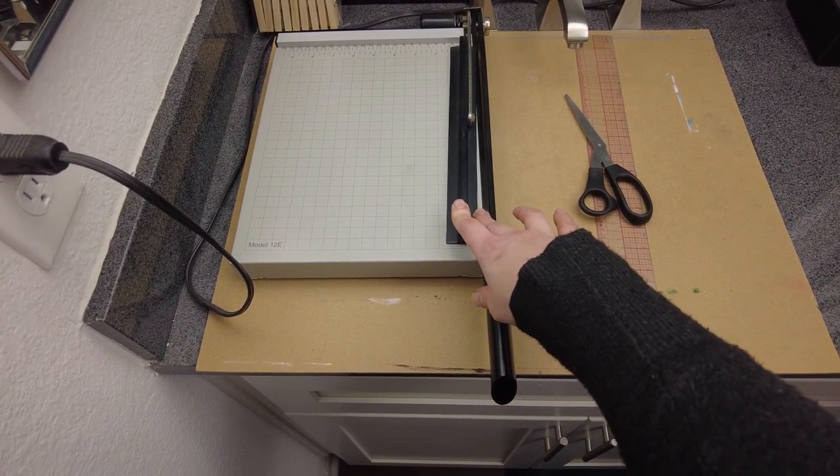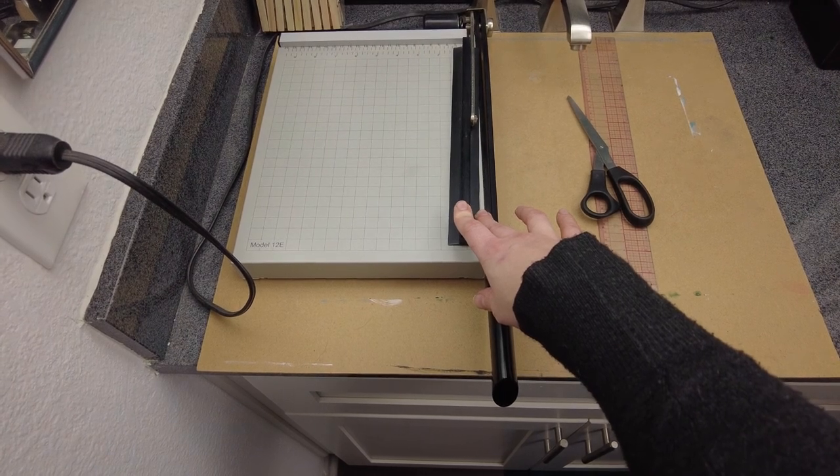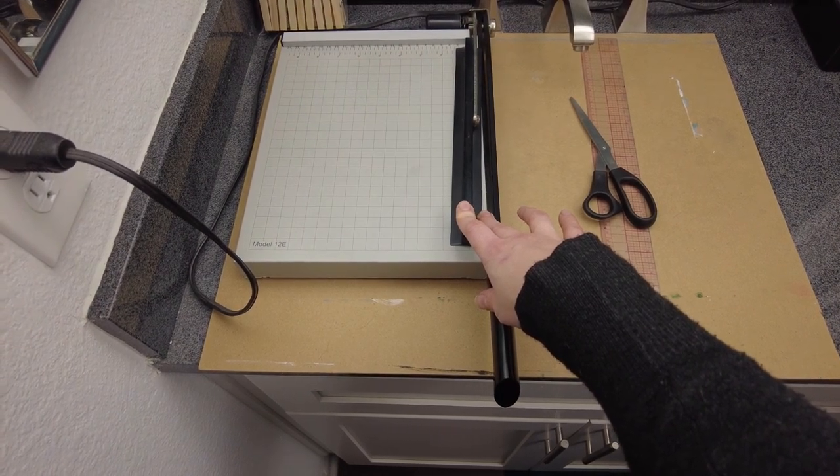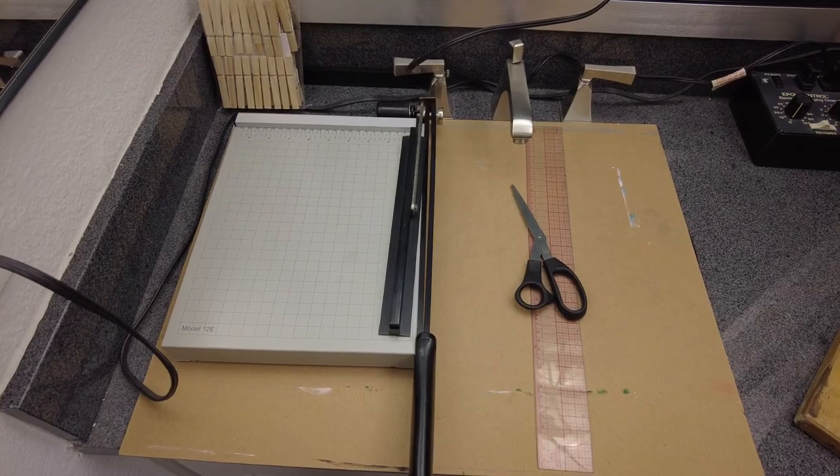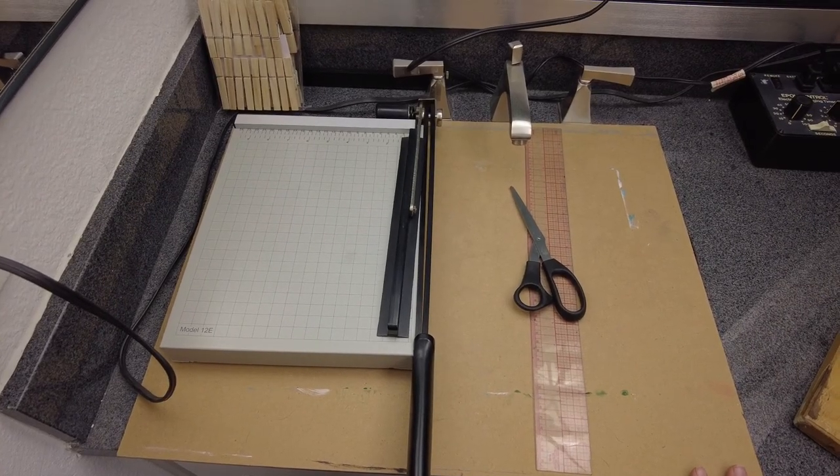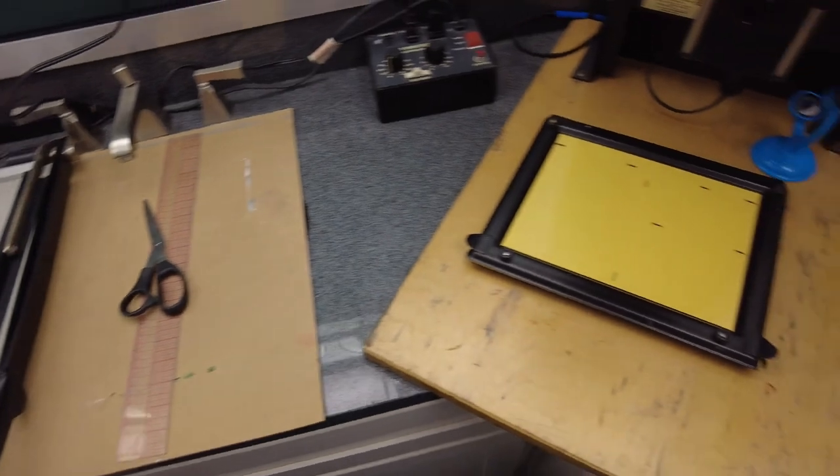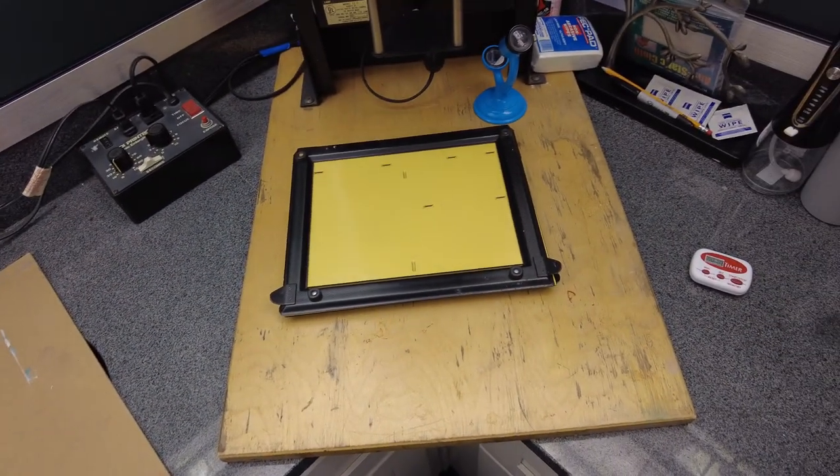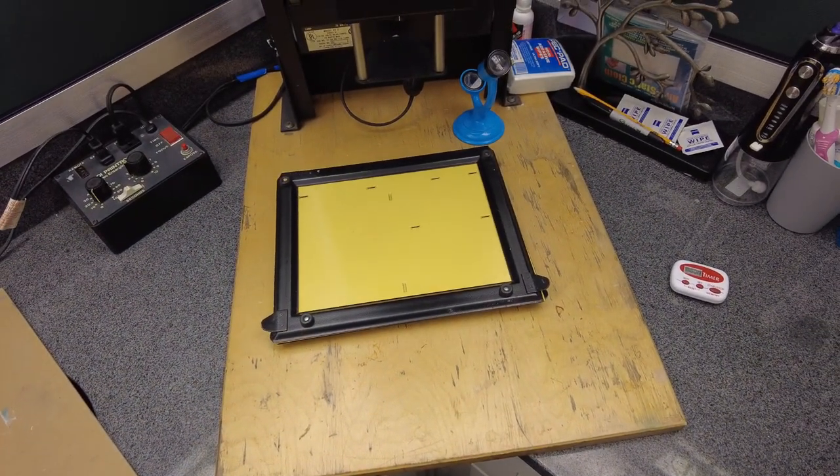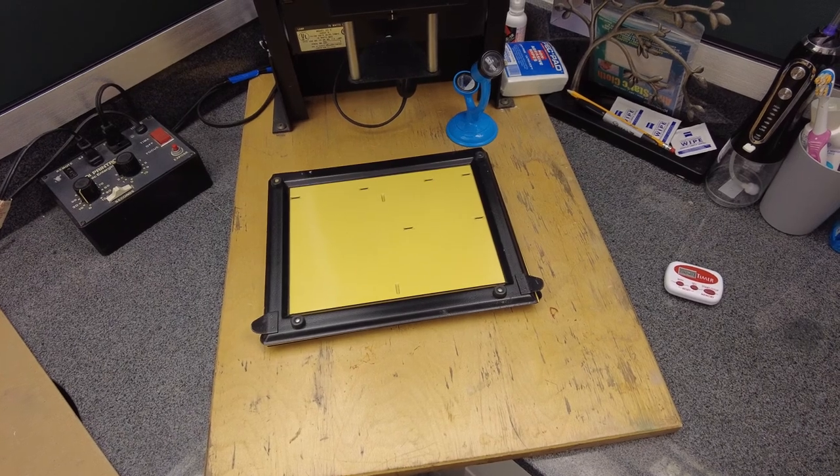This style paper cutter comes in at around $25 starting price on Amazon. If you don't have this extra counter space available you could actually do this right underneath your enlarger and just move the stuff underneath when you don't need it.